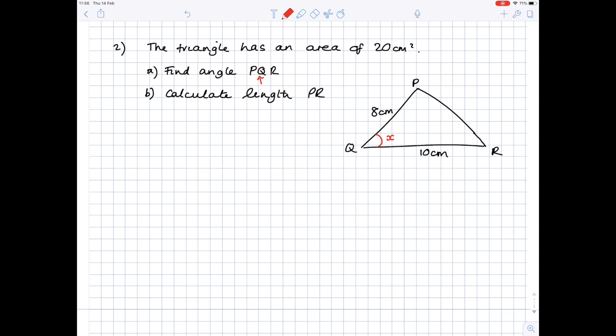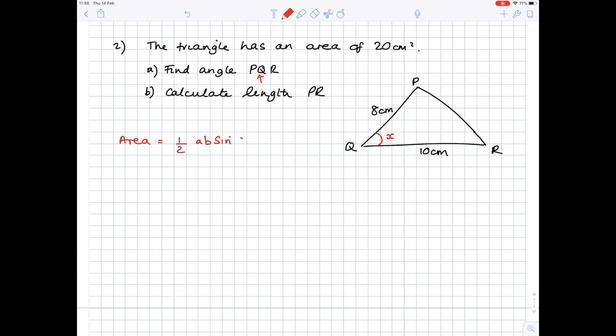And if we write out our formula, so area equals half A B sine C. So we know that the angle is C. So I'm going to label Q as C. The side opposite that is C. Again, it doesn't matter how you label the other two. I'm going to call R A, which means the side opposite that is A. And this is going to be B. So the side opposite that is B. And we're ready to get going because we know the area is 20. We need to write half and then substitute in the values you've been given. So that will be 8 for A. B is 10. We're looking for angle C. So we're going to write that there.